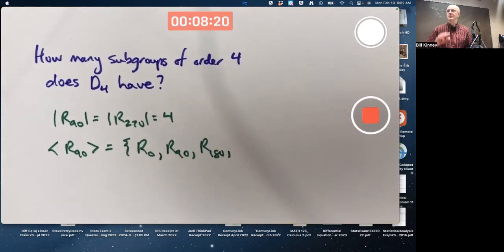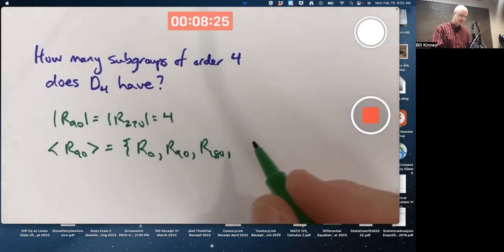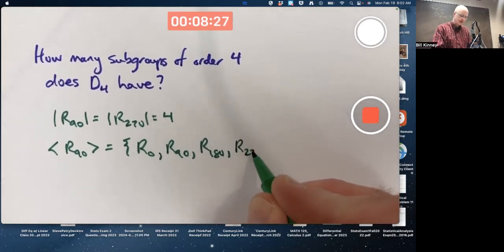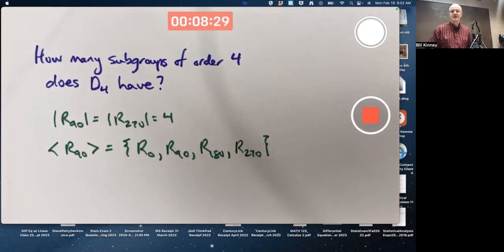And there's R270 when you compose R90, doing the operation 3 times. Then if you do it 4 times, you could call it R360, but it's equivalent to R0, brings you back to the identity.